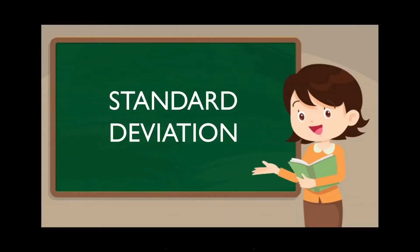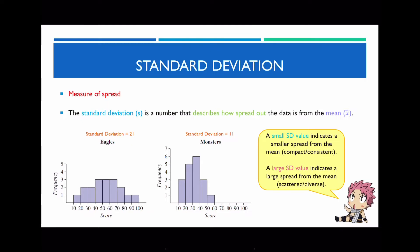So what is the standard deviation? The standard deviation is a measure of spread — it tells you how spread out data points are, but specifically it's a number that describes how spread out the data is from the mean. The standard deviation is represented by the letter S, whereas the mean is represented by X-bar. I've got two histograms showing the standard deviations between two sets of data. Notice that the standard deviation on the left is 21, whereas the standard deviation on the right is 11.